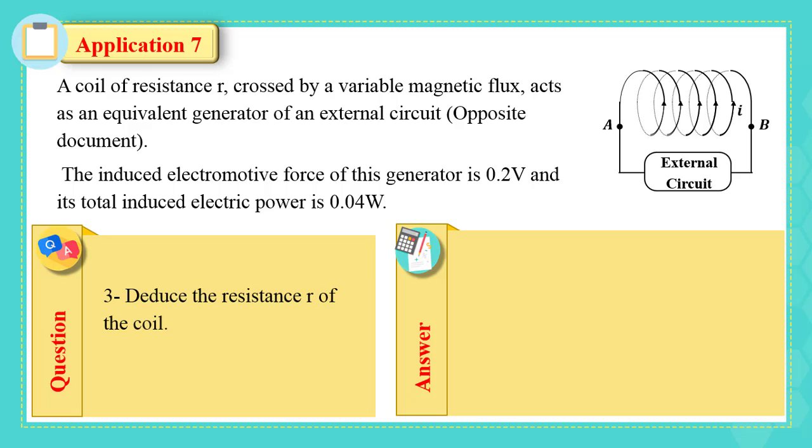3. Deduce the resistance R of the coil. P electric equals P useful plus P lost. P lost equals P electric minus P useful equals 0.008 watt. P lost represents the thermal energy dissipated by the resistance of the coil. So, P lost equals R I squared and R equals P lost over I squared equals 0.008 over 0.04 equals 0.2 ohm.